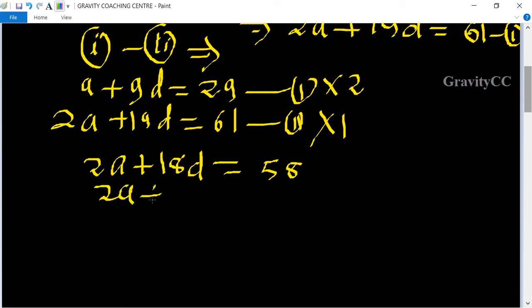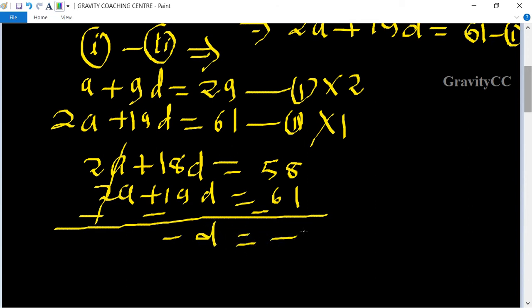And 2a + 19d = 61, minus minus minus. The 2a terms cancel, so -d = -3.